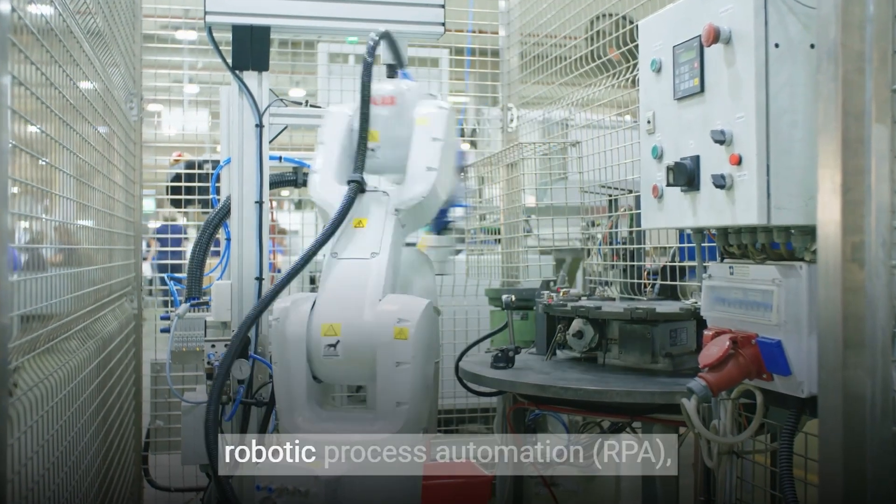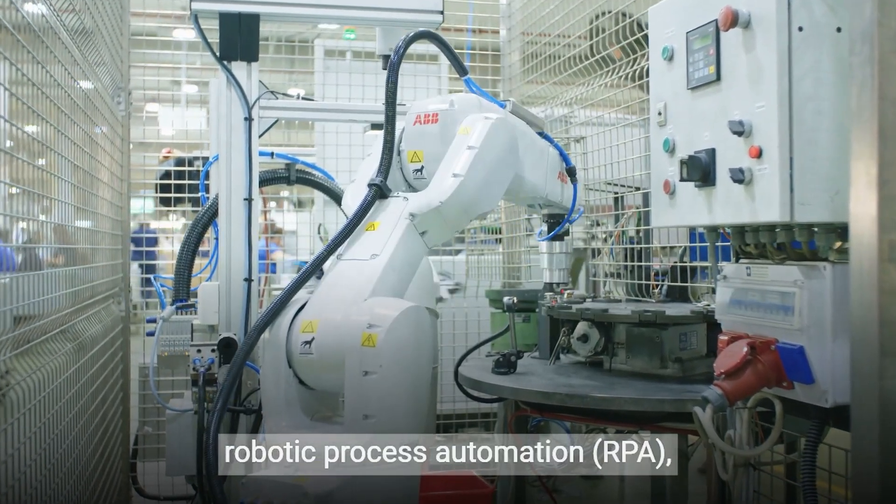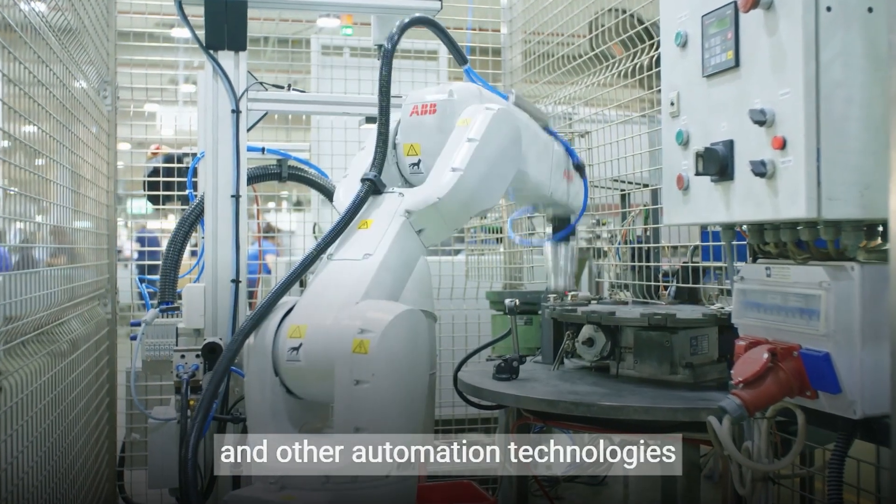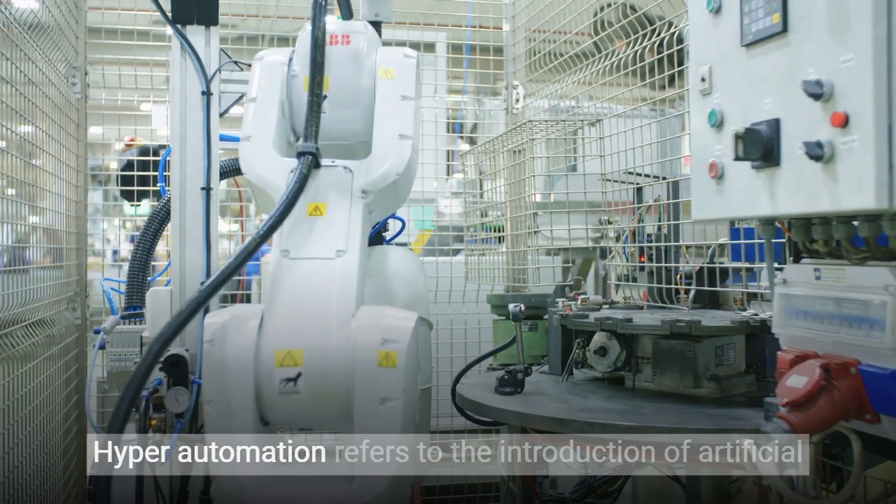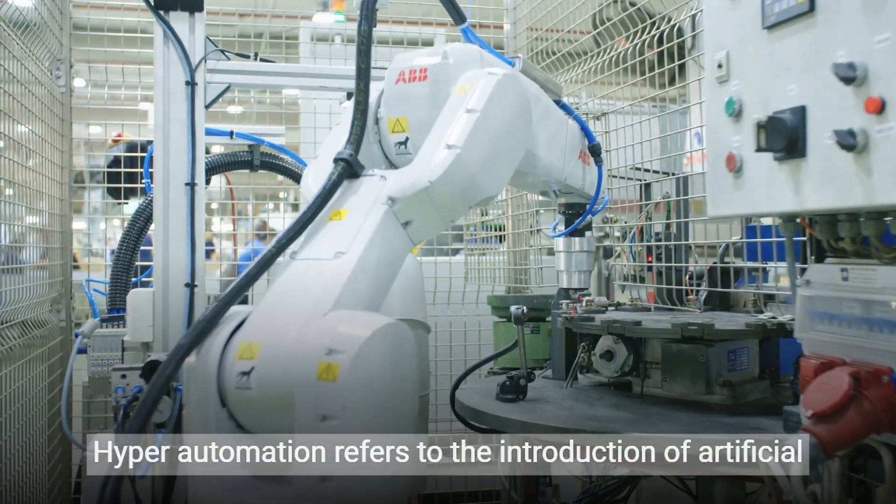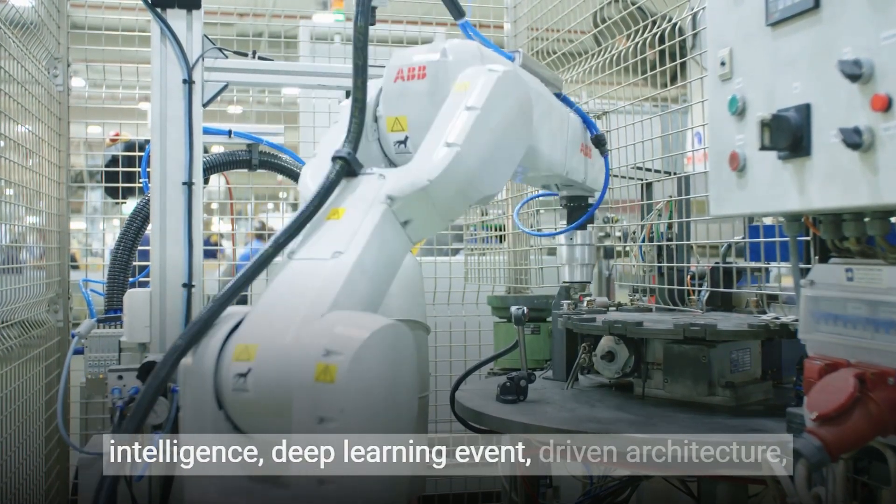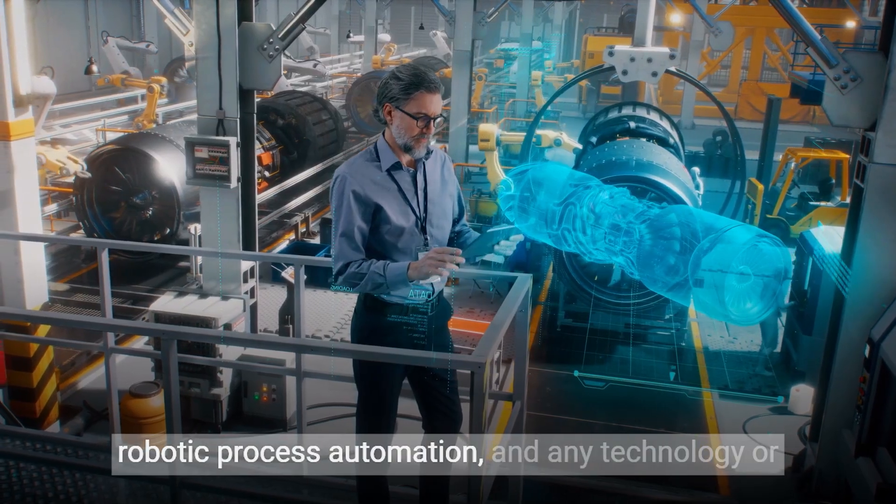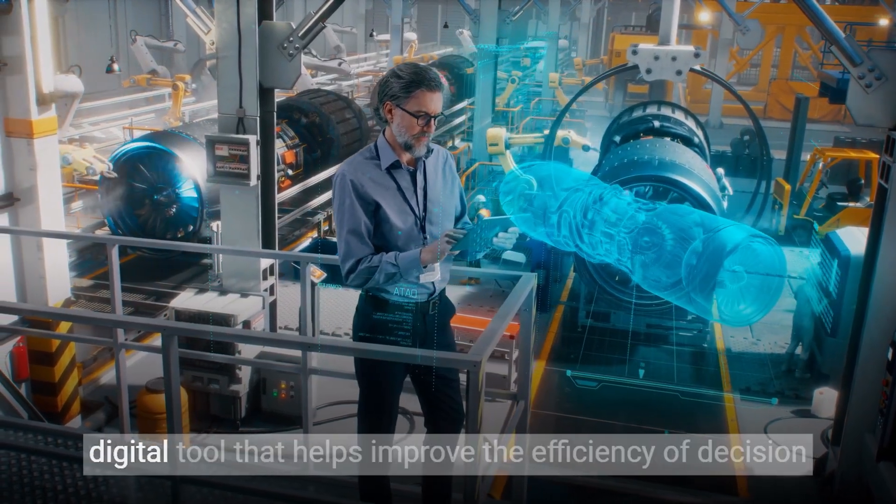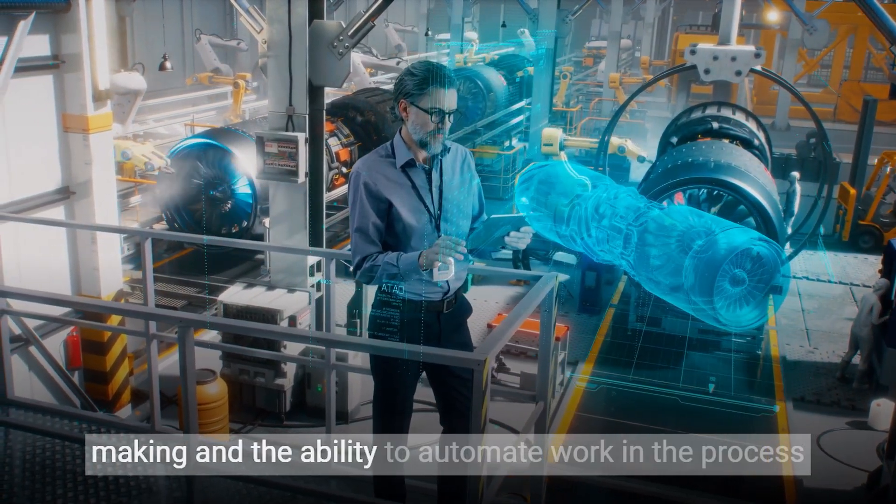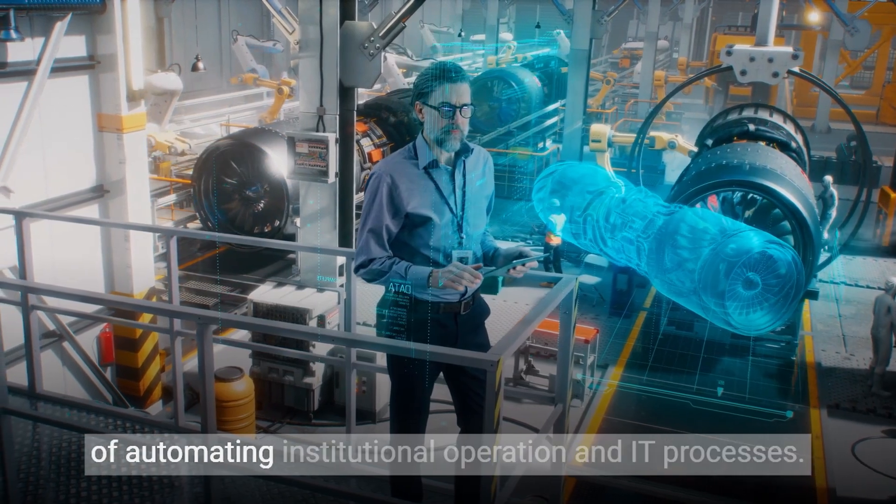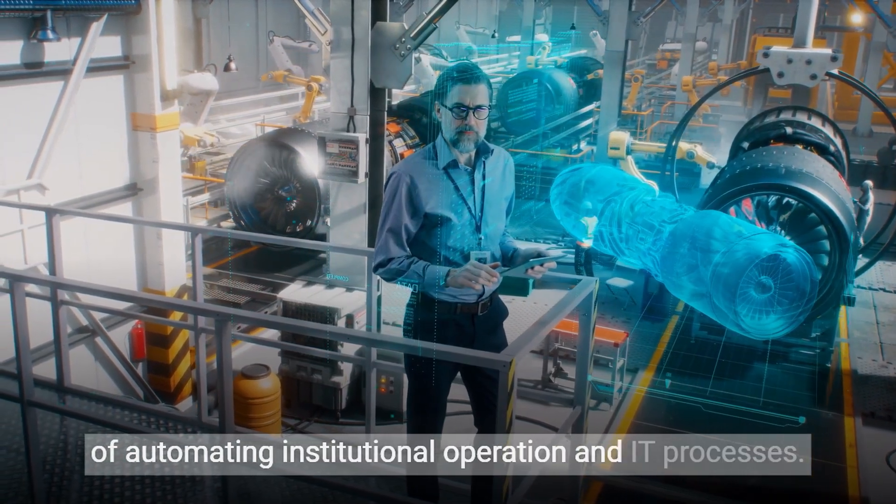Fifth, hyper-automation. Robotic process automation (RPA) and other automation technologies continue to replace manual labor. Hyper-automation refers to the introduction of artificial intelligence, deep learning, event-driven architecture, and robotic process automation and any technology or digital tool that helps improve the efficiency of decision-making and the ability to automate work in the process of automating institutional operation and IT processes.